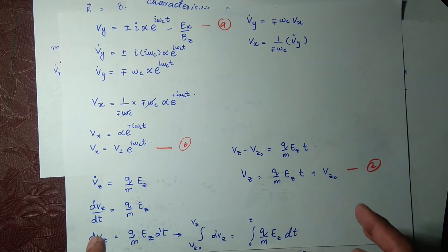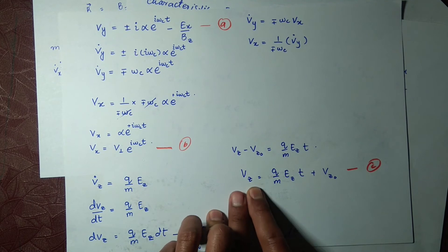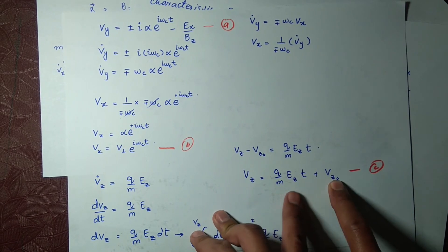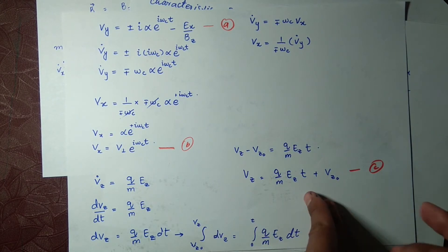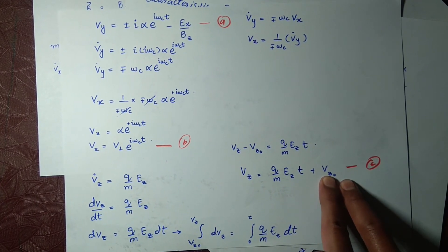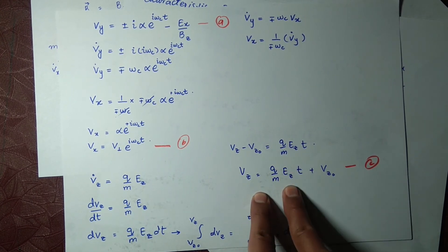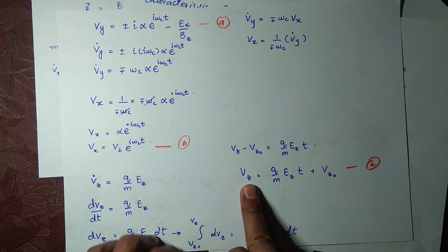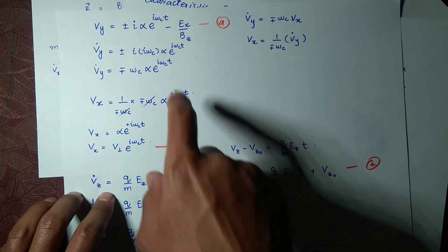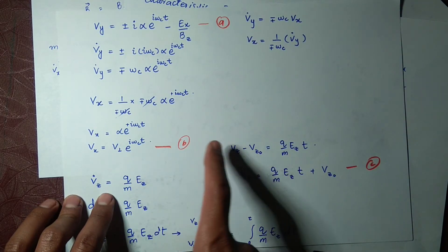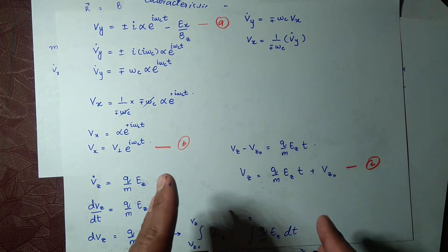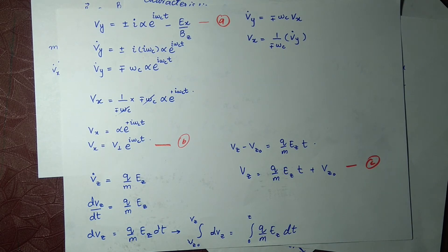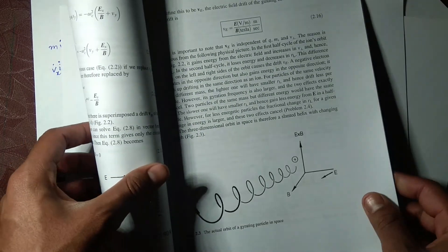These velocities can be integrated to find position. Looking at v_z, it tells us that the velocity is increasing — at t equals zero it had its original value, and at time t this velocity has increased by a time-dependent factor. So v_z is increasing, while v_y has a small change and v_x appears to remain the same.